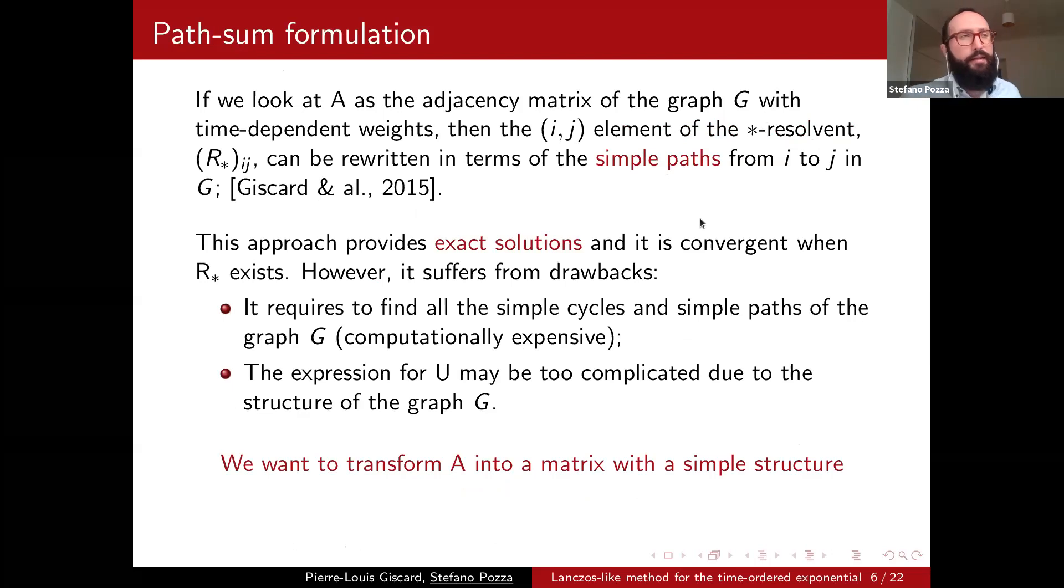Basically the idea is that if you look at the sparsity pattern of the matrix A and the associated graph thinking about A as the adjacency matrix, then you can express the ij elements of the resolvent as some combination of continued fractions. So here the complicated point is that if the sparsity pattern of the matrix is complex, then the method is going to be too much demanding to actually give a nice solution.